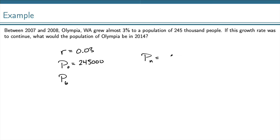we have P sub n equals P0 times 1 plus r to the n. So P sub 6 is P0, which is 245,000 times 1 plus r to the n, which is 6.